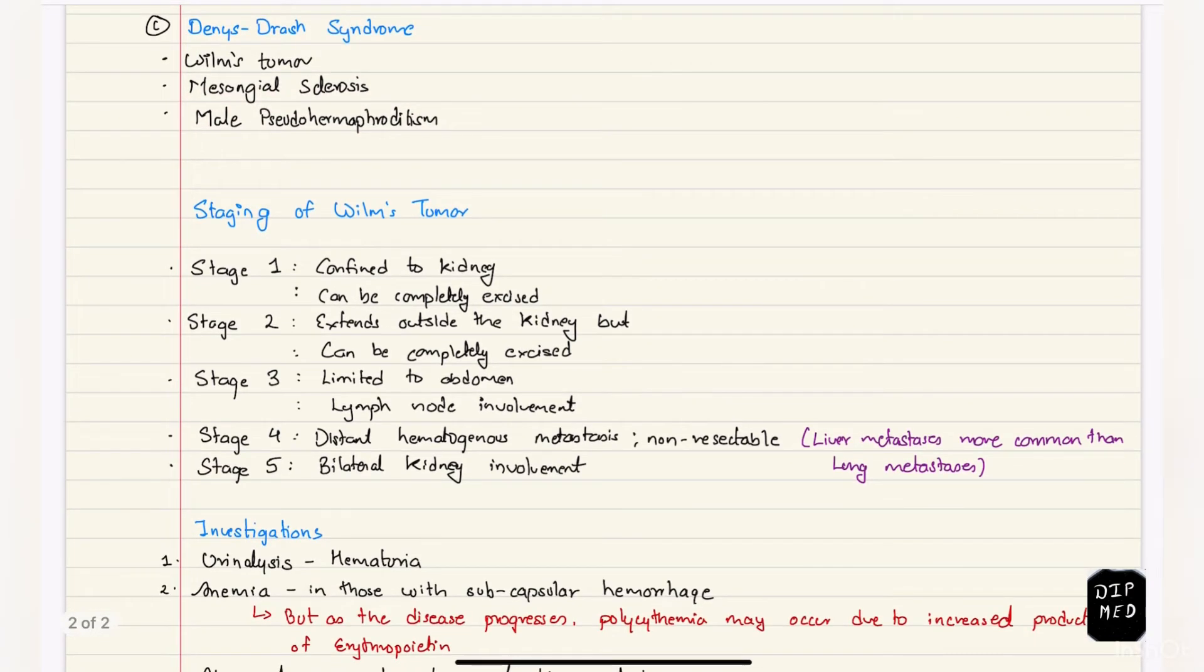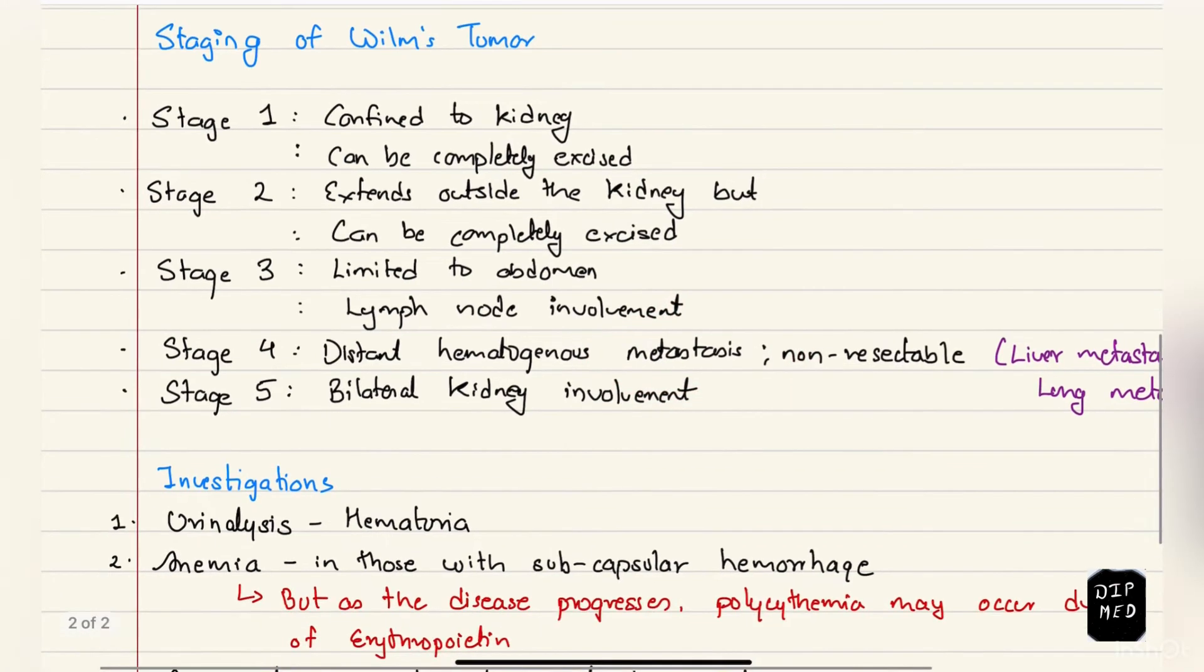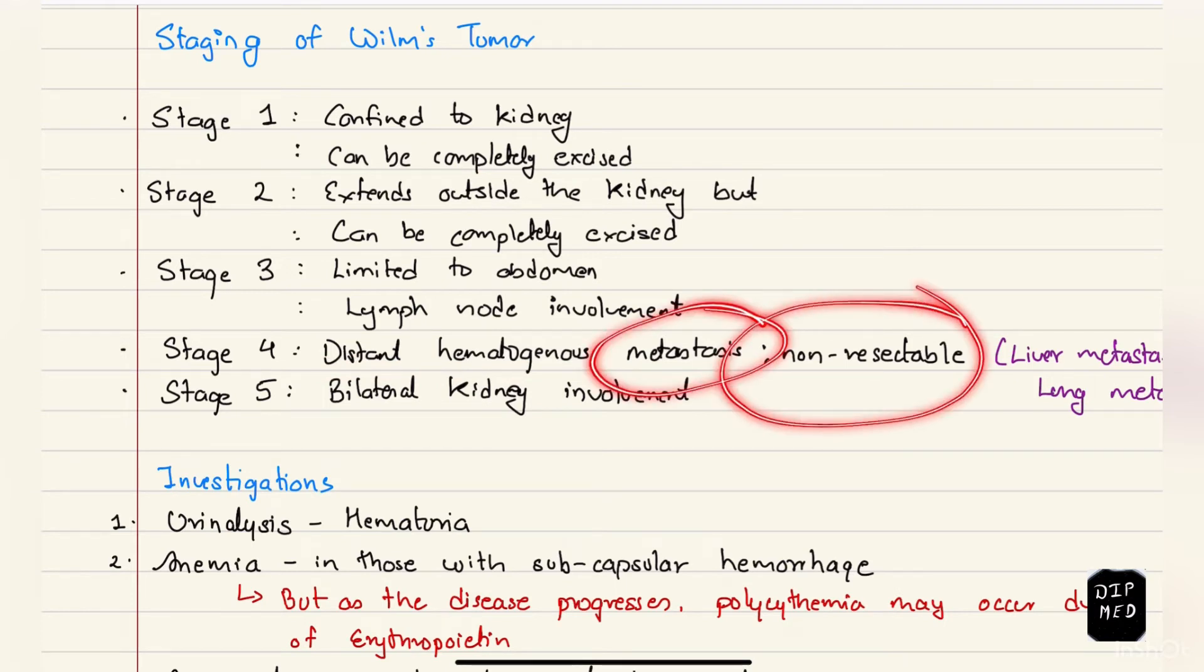Now coming to the staging of Wilms tumor. Stage 1 is when the tumor is confined to kidney and can be completely excised. Stage 2 is when the tumor extends outside the kidney but still can be completely excised. Stage 3 is when the tumor is limited to abdomen and there is lymph node involvement. Stage 4 is when there is presence of metastasis.